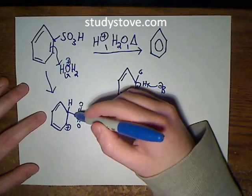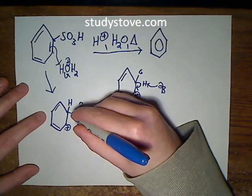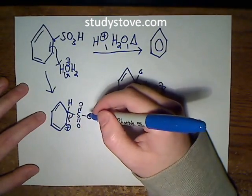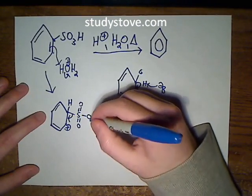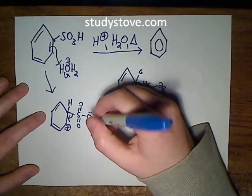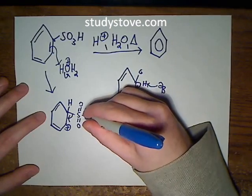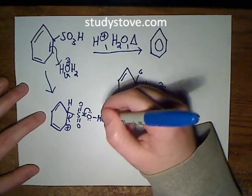So what we're going to do is take the electrons in this bond with the sulfur and bring them down to reform aromaticity. That would put a positive charge on this sulfur, so we're going to take one of these lone pairs from the oxygen and bring them down to form a double bond.